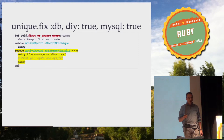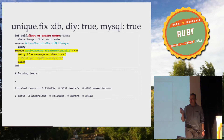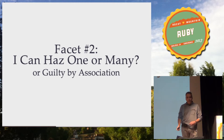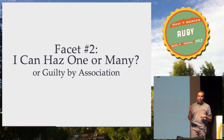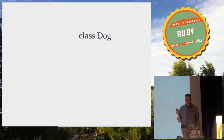We run our tests and now we are succeeding on all databases. Facet number two: issues associated with associations or relations. This is a very similar facet.